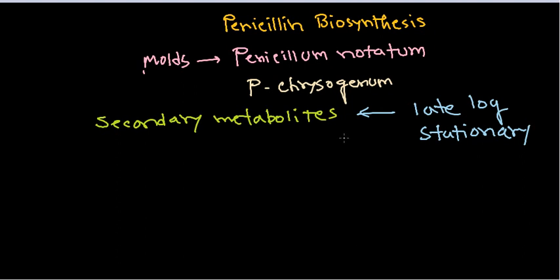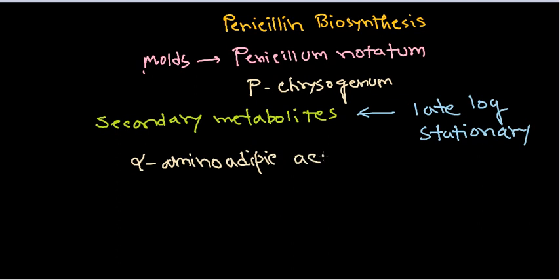During the late log phase, the major precursor for the production of this antibiotic is alpha-aminoadipic acid, also written as alpha-AAA or L-alpha-aminoadipic acid. This is the precursor molecule from which penicillin biosynthesis begins.